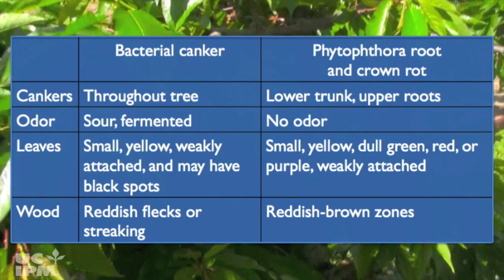And that about covers it. So when you're out in your orchard and see cankers, symptoms will help you determine if you have Phytophthora root and crown rot or bacterial canker.